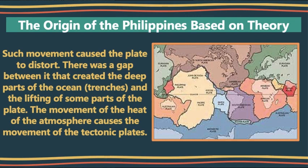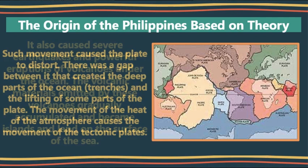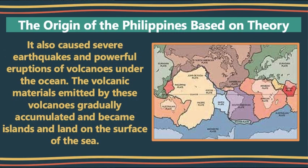There is a gap between plates that created the deep parts of the ocean — trenches — and the lifting of some parts of the plate. The movement of heat in the atmosphere causes the movement of the tectonic plates. It also caused severe earthquakes and powerful eruptions of volcanoes under the ocean.